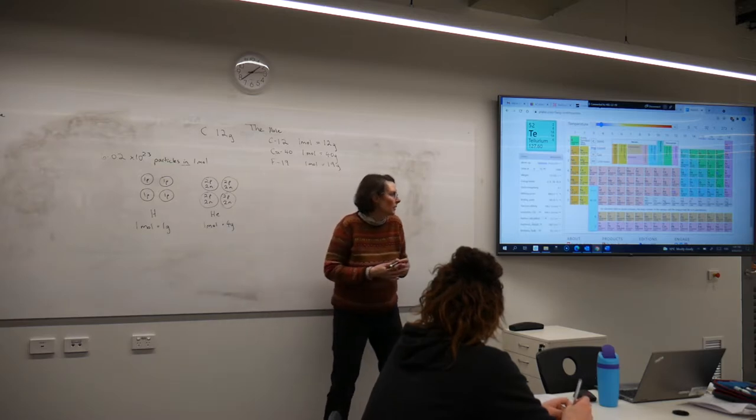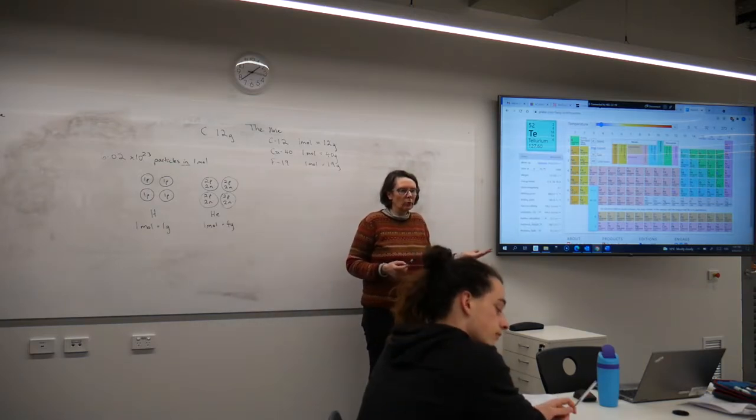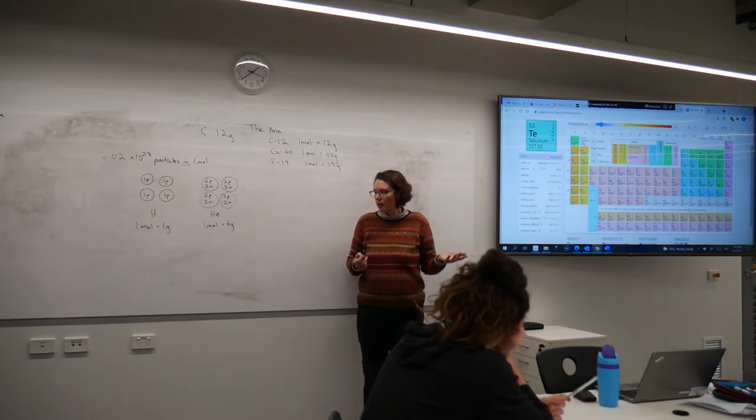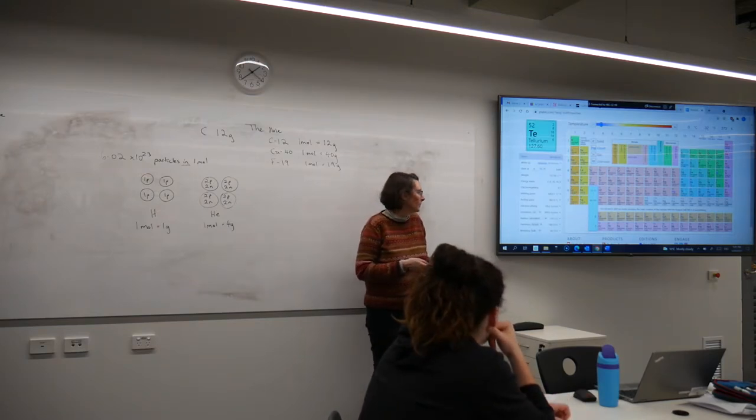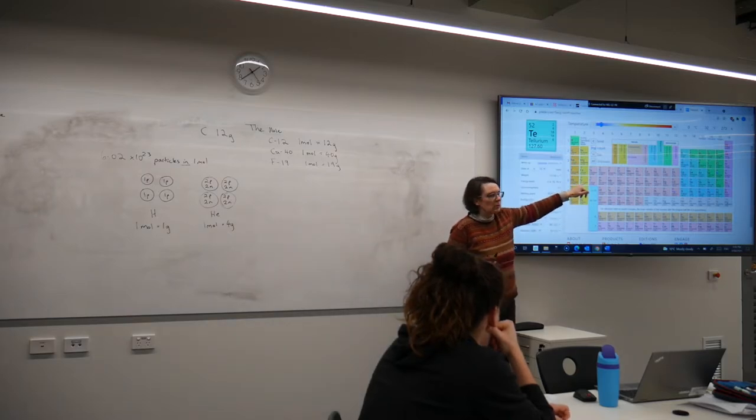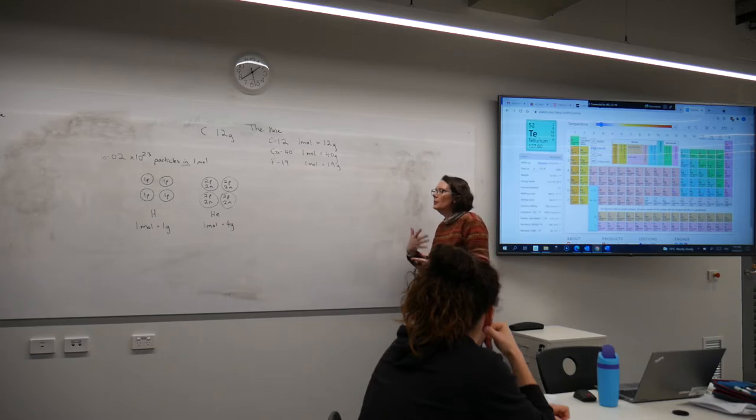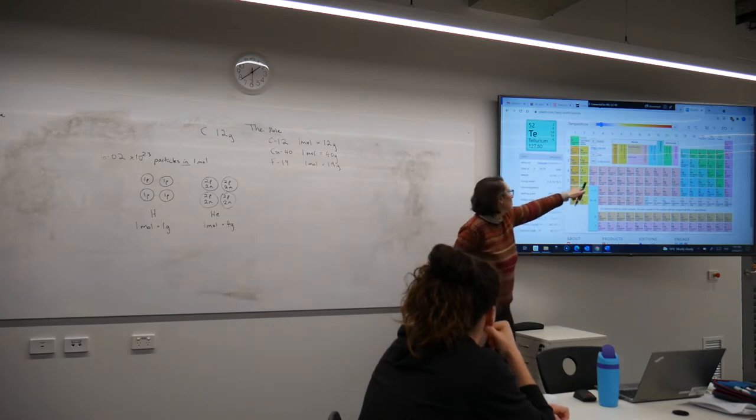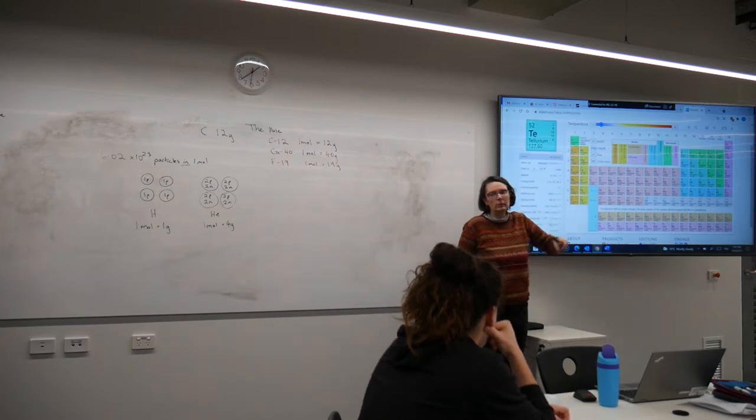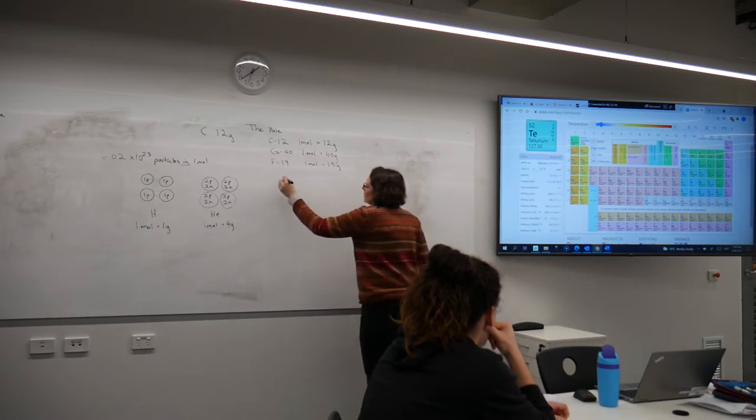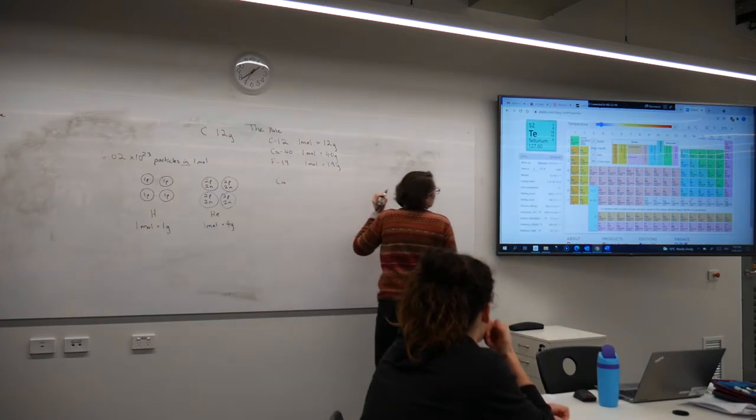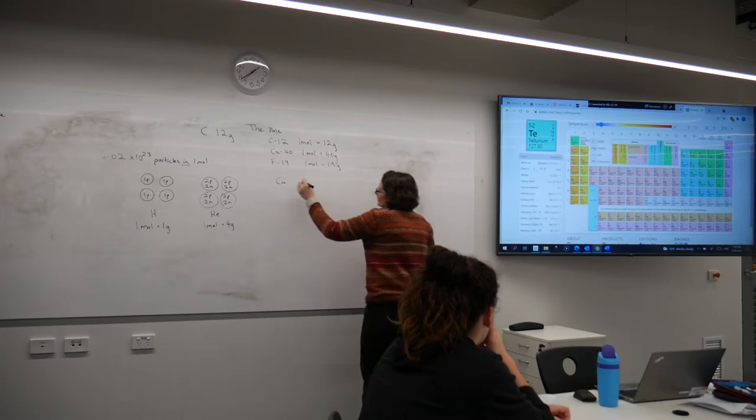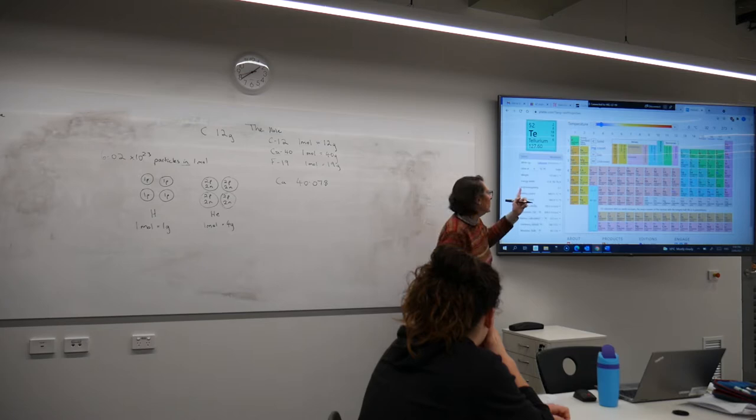And we know that there are more than one type of isotope for each element, which is why we then need to use the relative atomic mass. Because some of them will be a bit different. So here for my calcium, if you look at the relative atomic mass of just the element calcium, it's 40.078. That's what it tells me on here.